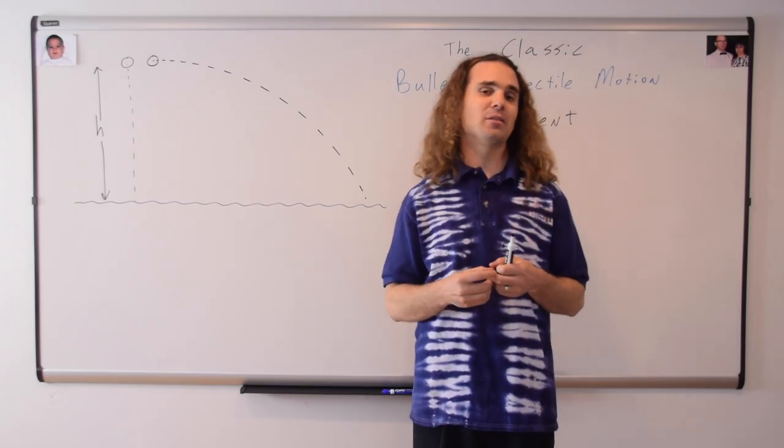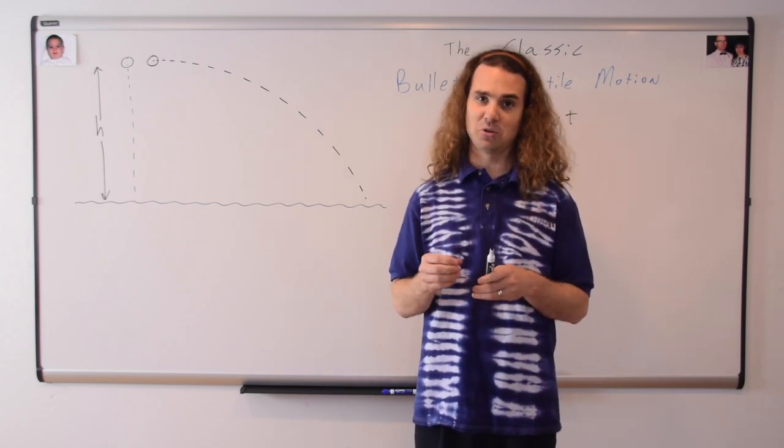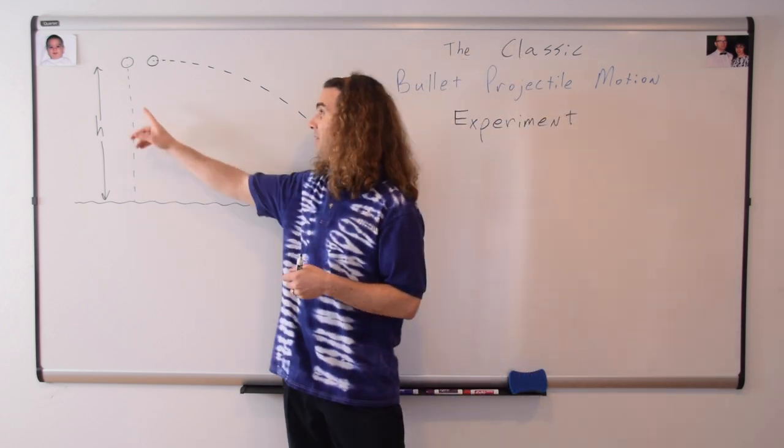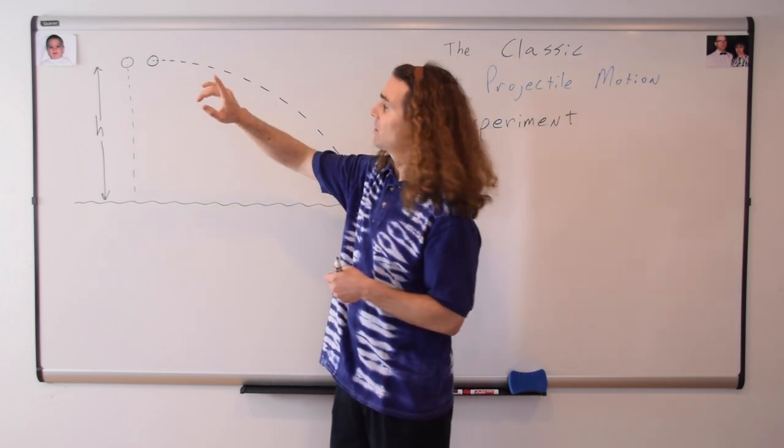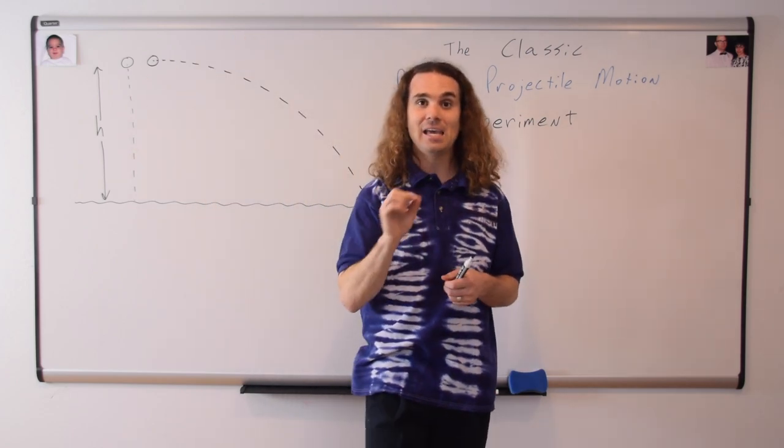As you can see from the video, rather than using bullets, we are going to use a lacrosse ball, which will yield the same results and will cost a lot less money. So, we have one lacrosse ball that is dropped and simultaneously a lacrosse ball that is launched horizontally, both from the same height, which we are going to identify as h.